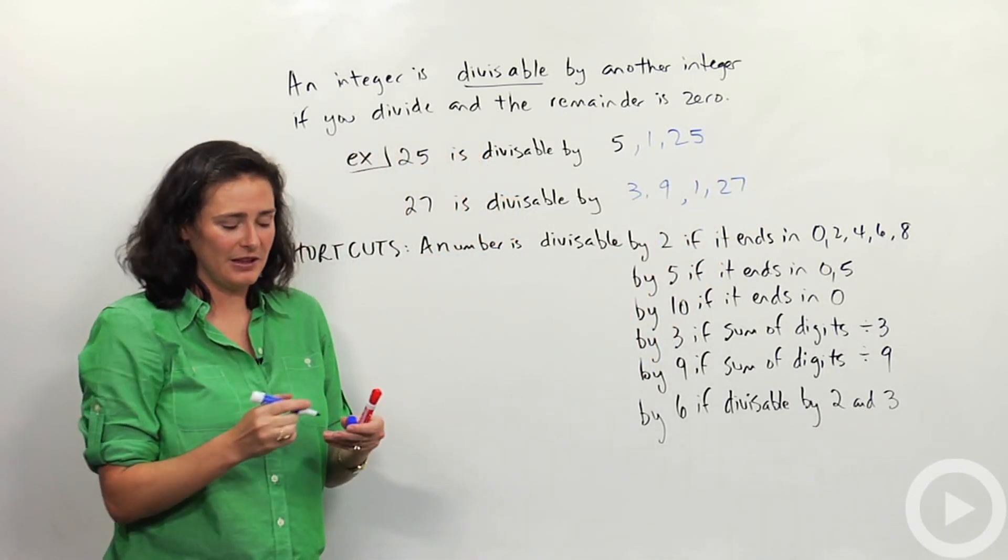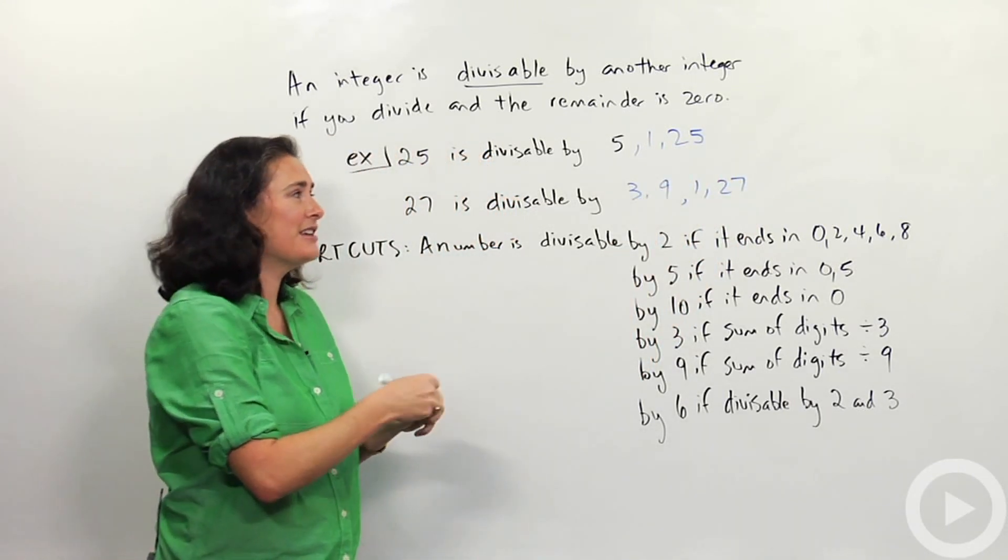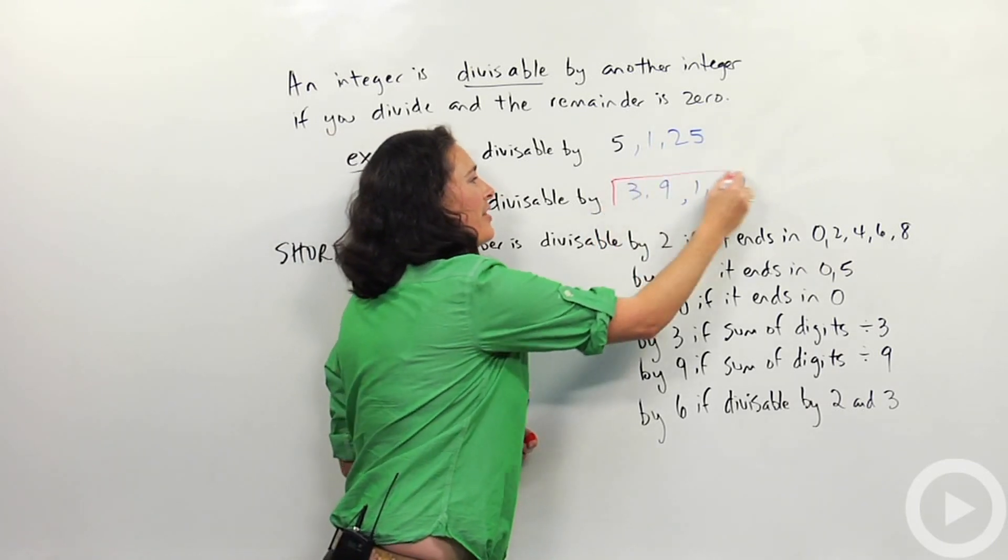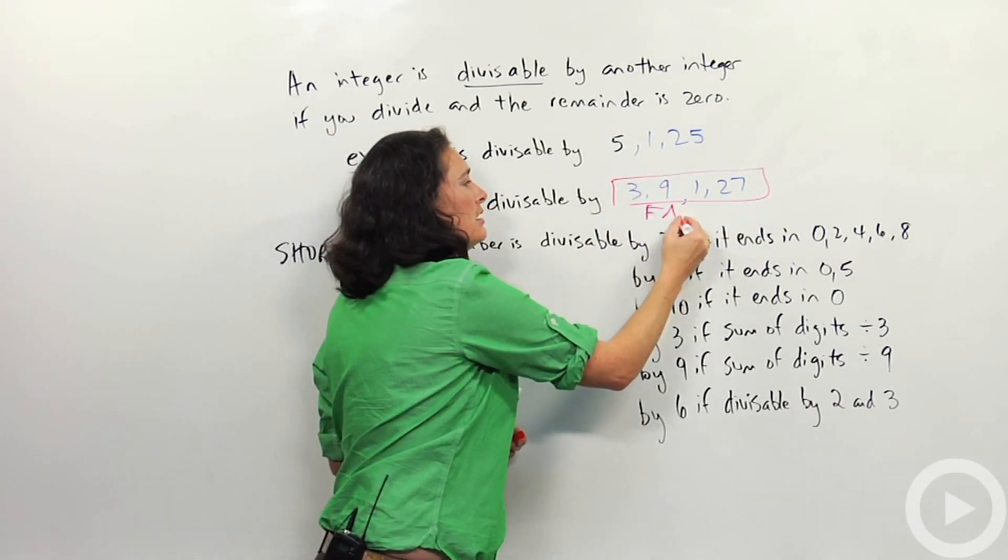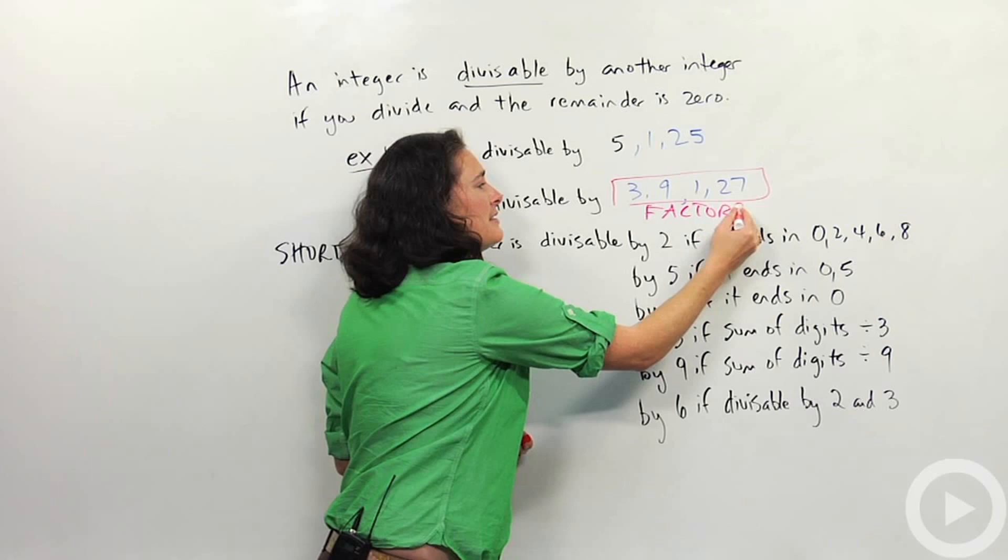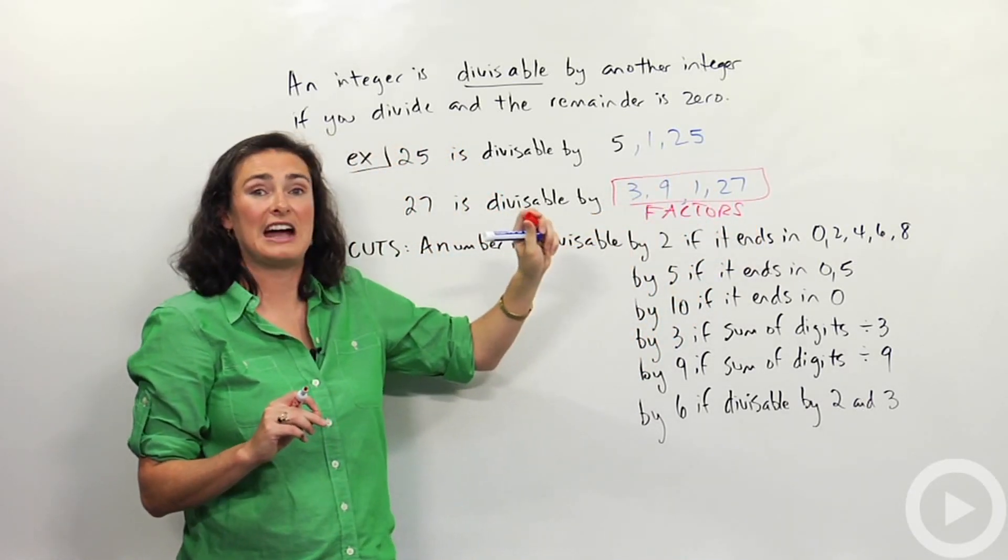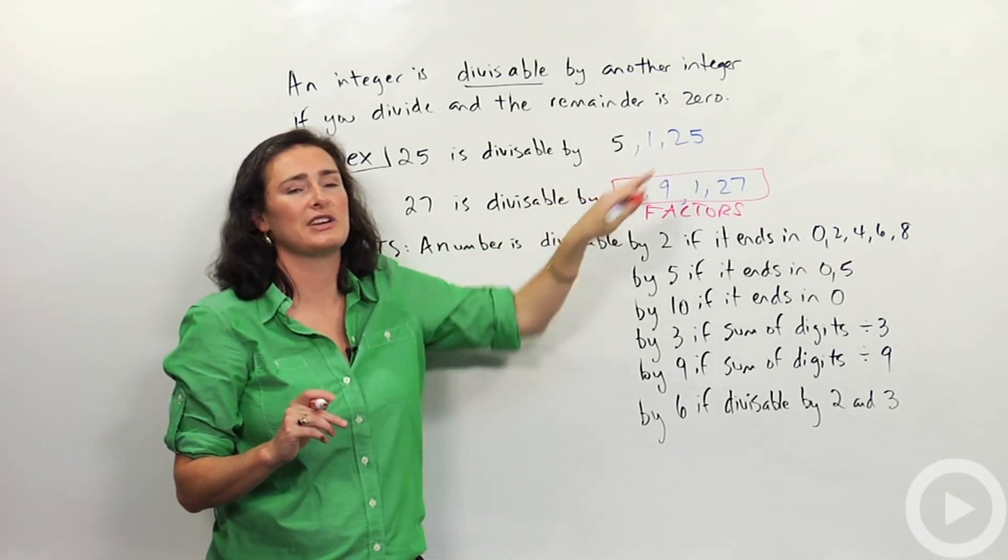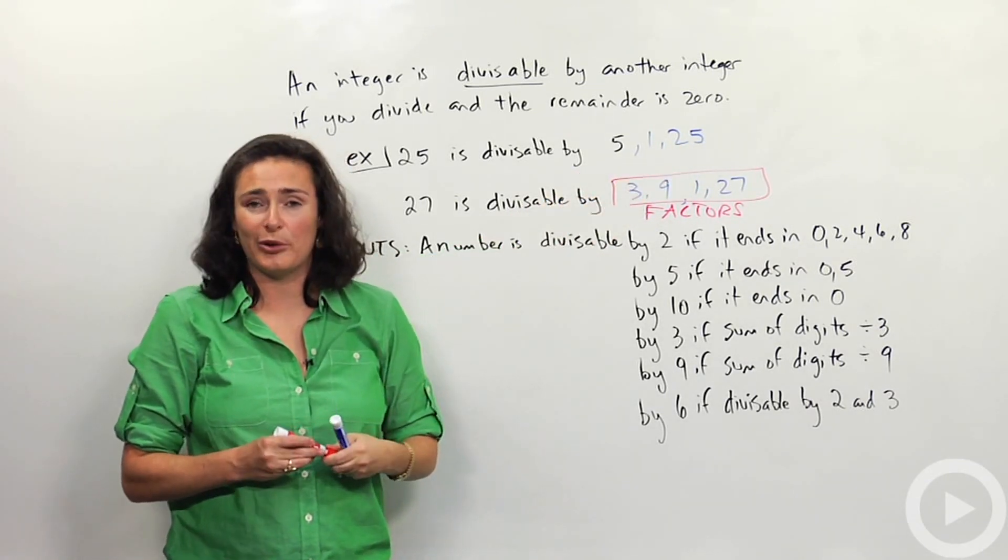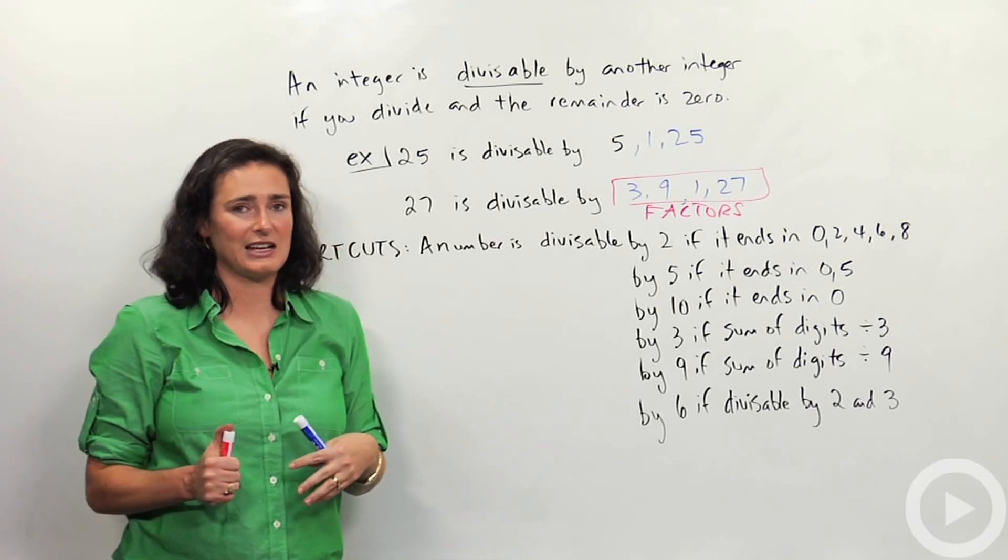Those are what we mean by divisibility. And then these numbers here, this whole group of numbers is called the factors. If I wanted to list the factors of 27, I would list these four numbers here. Or if I want to list the factors of 25, I list these three numbers here. We're going to talk a lot more about divisibility and factors in the next few ideas.